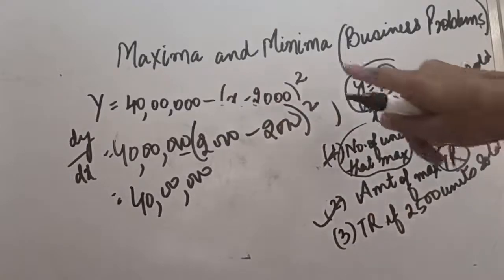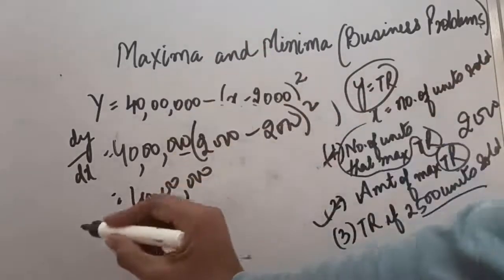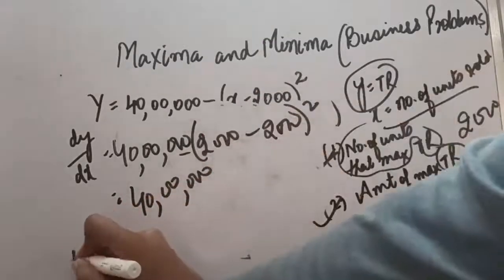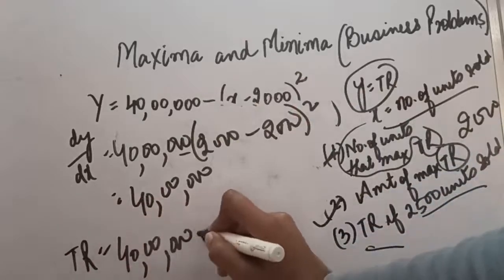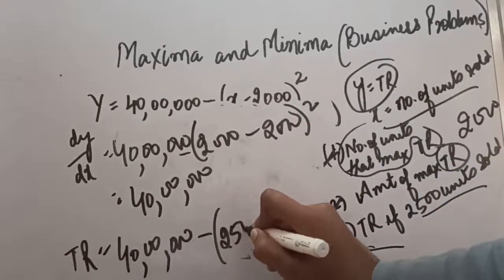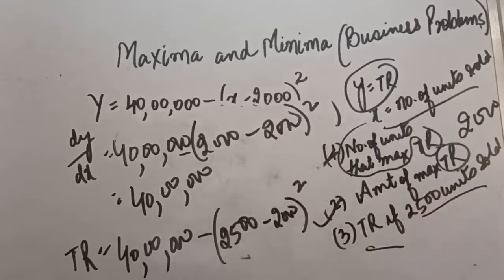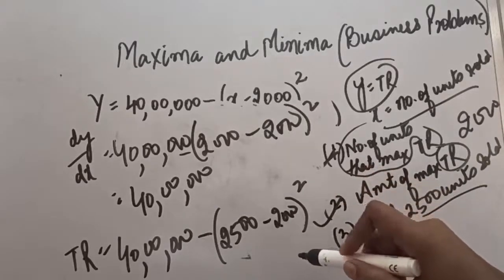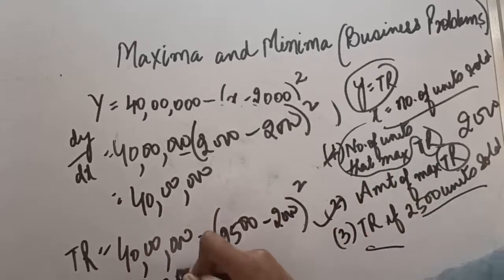The third part asks for total revenue if 2500 units are produced. With x equals 2500, TR equals 40 lakh minus 2500 minus 2000 squared, which is 40 lakh minus 500 squared. That is 40 lakh minus 2 lakh 50,000, giving a total revenue of 37 lakh 50,000.